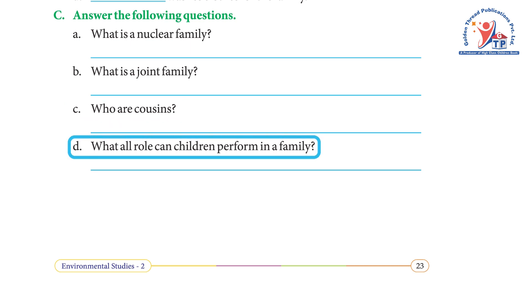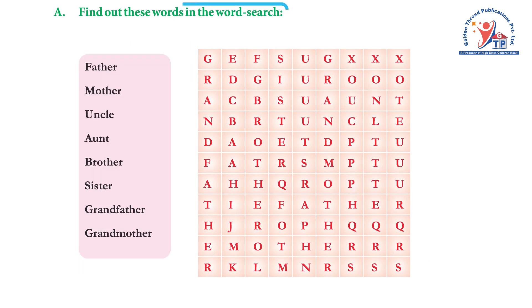D — what roles can children perform in a family? Answer: they should help the mother in the kitchen; they should help in keeping the house clean; they can do small jobs like bringing things from the nearby market; they can look after the plants; and they should take care of their younger brothers or sisters.